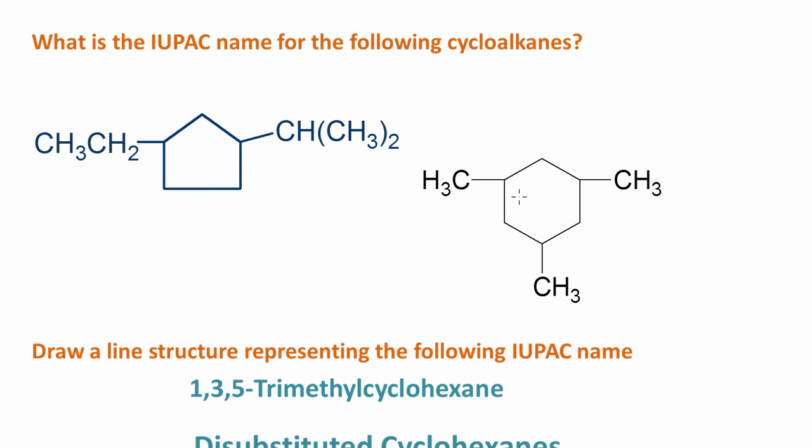Let's look at this one. We have three methyl groups. Let's number the carbons from one of the methyl groups: 1, 2, 3, 4, 5, 6. Then we'll number the other way as well. I could start here at 1, 2, 3, 4, 5, and 6.